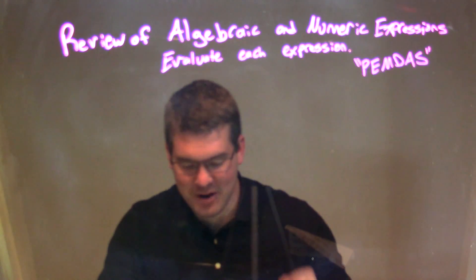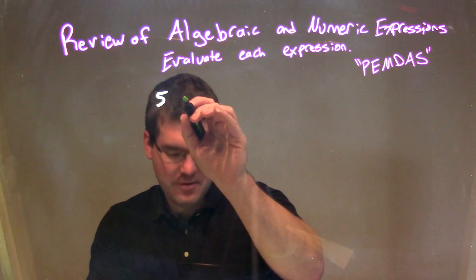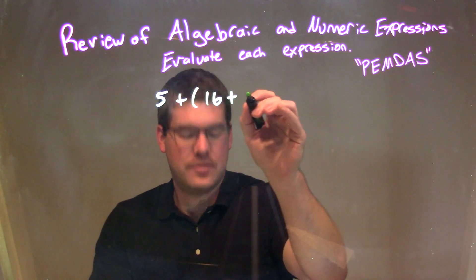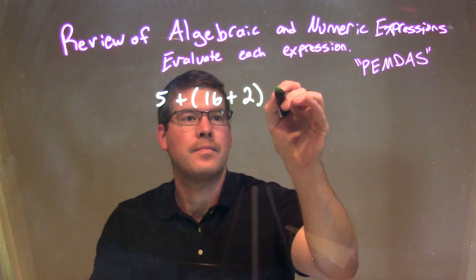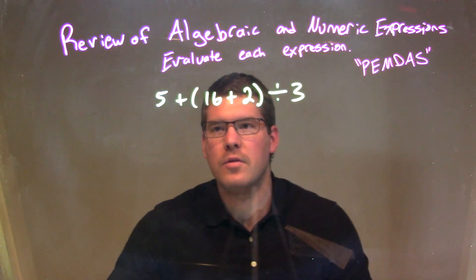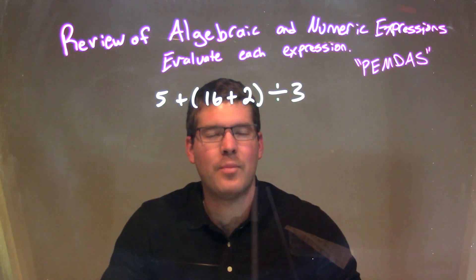So if I was given this expression: 5 plus 16 plus 2 divided by 3. So 5 plus 16 plus 2 divided by 3.